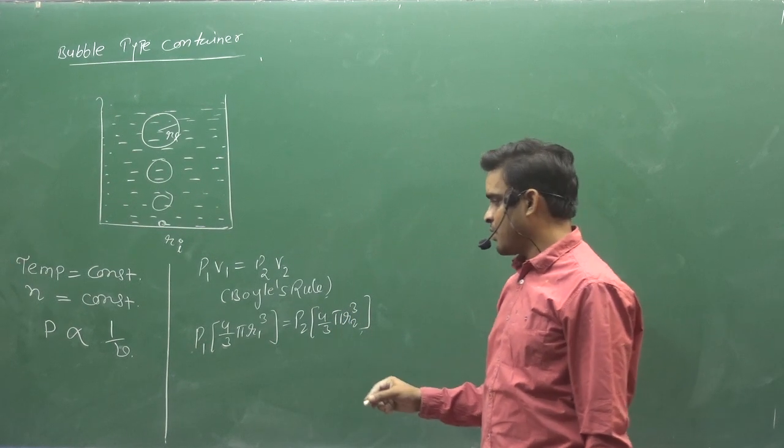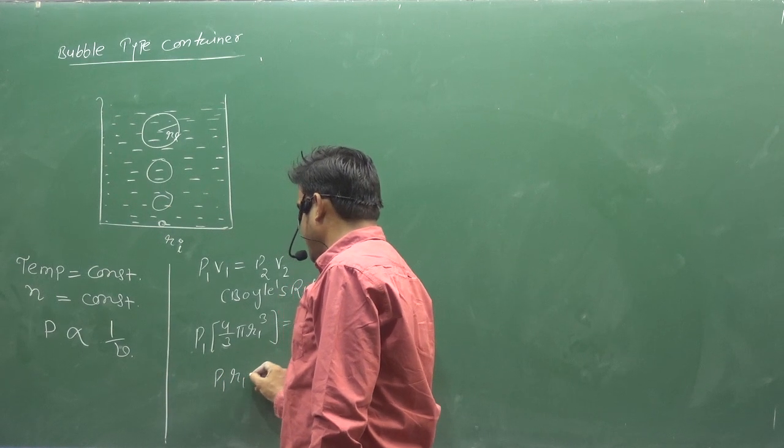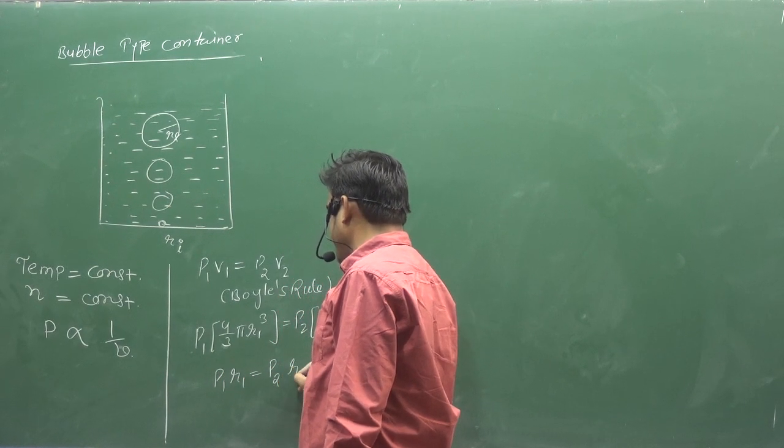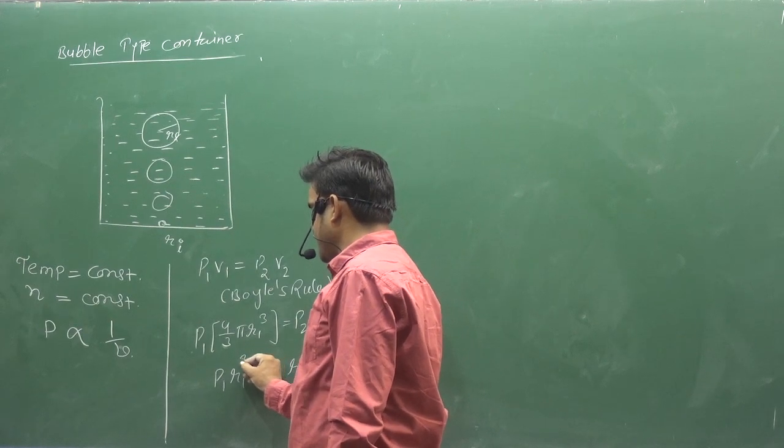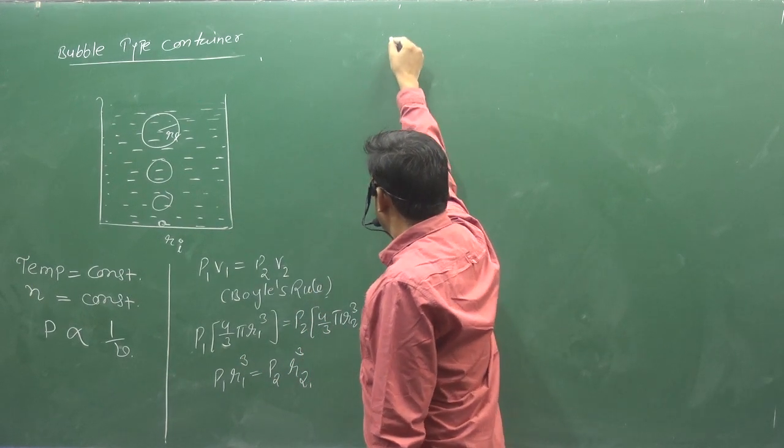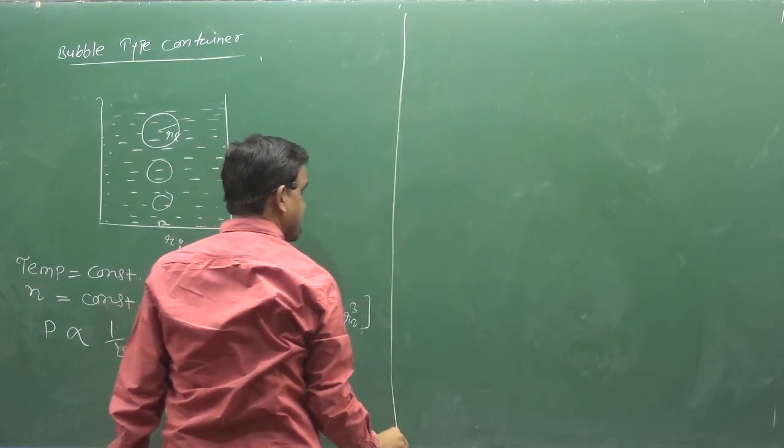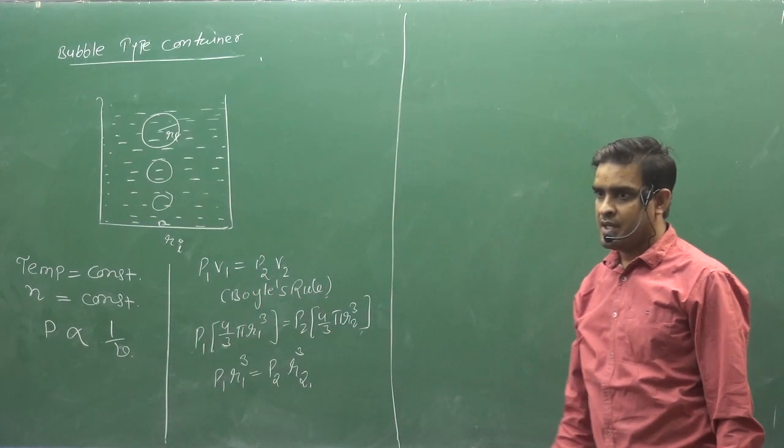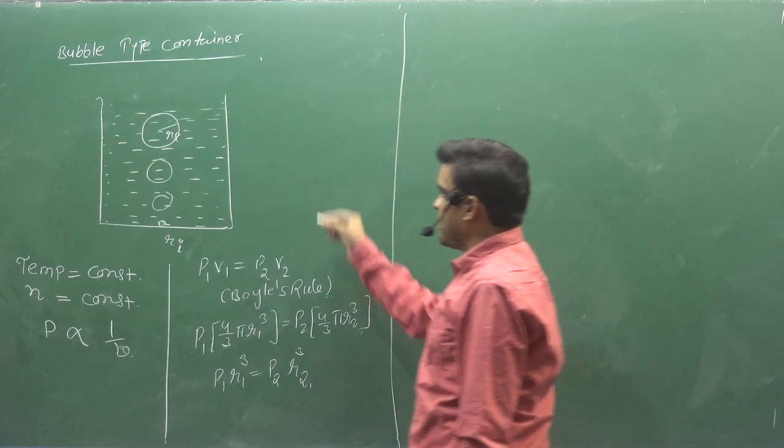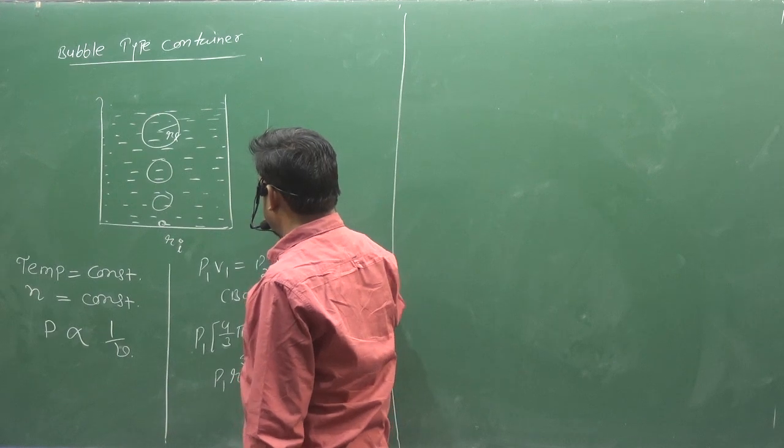4 by 3 cross. So I have P1 R1 cube equal to P2 R2 cube. What is the next point? Can you tell P1? Yes. But what is the rule? What is the rule? You have given this height.